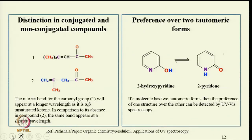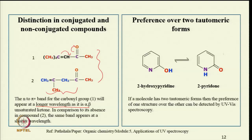Distinction between conjugated and non-conjugated compounds can also be made. For example, in compound 1 there is conjugation, whereas in compound 2 there is no conjugation. The n to pi* band for the carbonyl group in compound 1 will appear at a longer wavelength because it is an alpha, beta-unsaturated ketone — the ketone group is in conjugation with the double bond. Whereas in compound 2, the C=O n to pi* band appears at a shorter wavelength since this C=O is not in conjugation with the double bond.